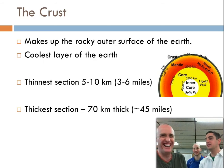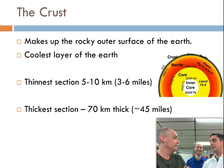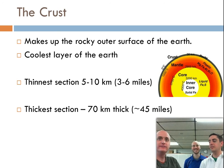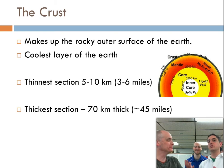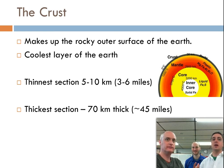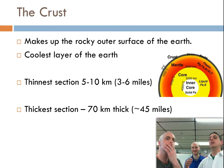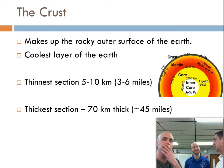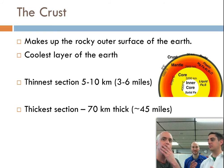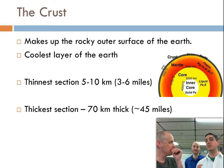So, the crust is my favorite place — that's where I keep all my stuff. Basically, the crust makes up the rocky outer surface of the Earth. This is the part you're most familiar with because that's what we live on. It's the coolest layer of Earth because it's farthest from the middle and also exposed to the atmosphere, so it experiences temperature swings, whereas the other layers tend to be pretty constant in their temperature. It's also the thinnest section — only about five to ten kilometers thick, which is nothing.